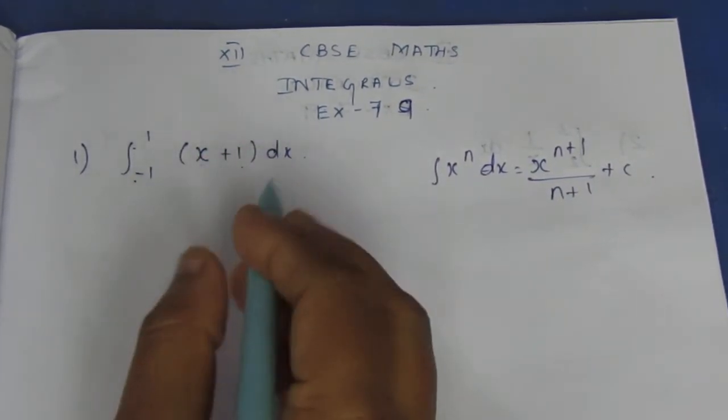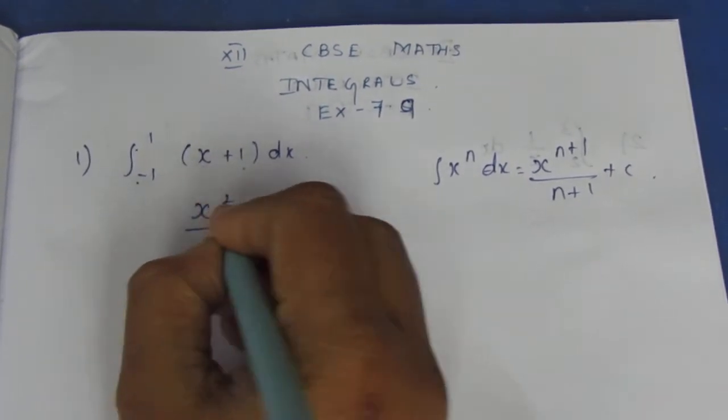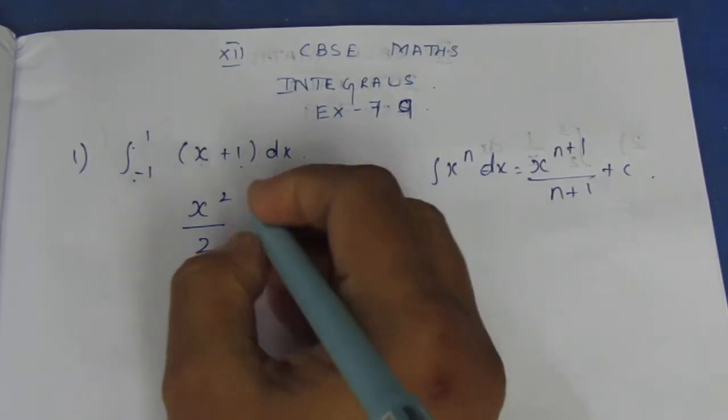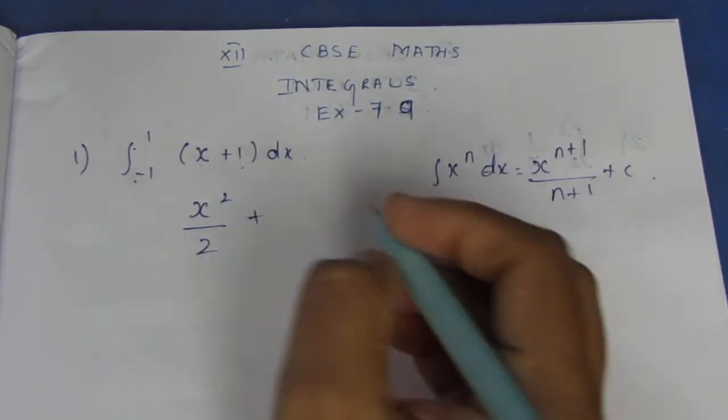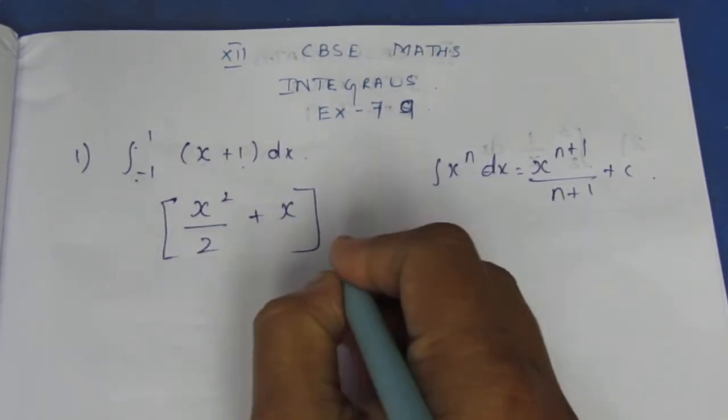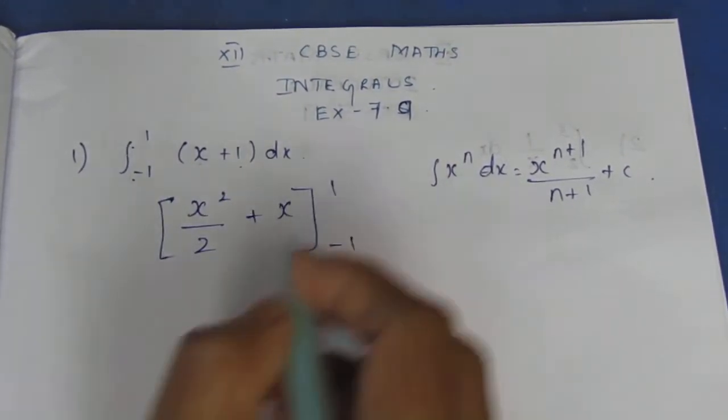Here x^1 means adding 1 on the numerator, it becomes x^2 by 2. The same will come in the denominator. So x^2 by 2 plus for x the integration is 1, the integration is x, with the value from minus 1 to 1.